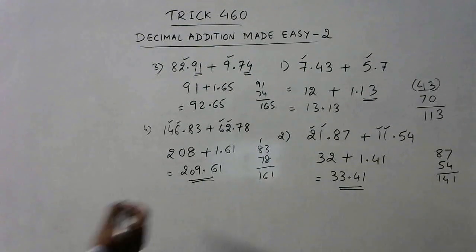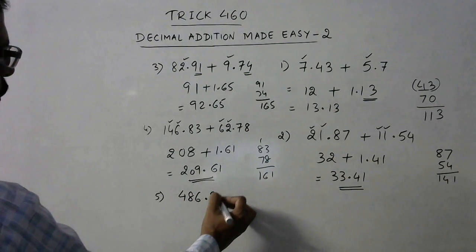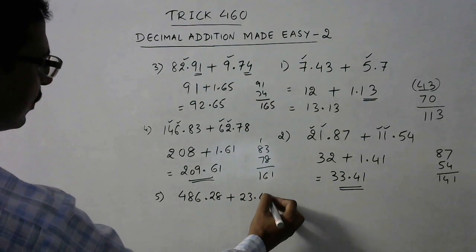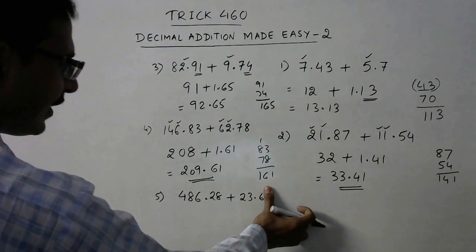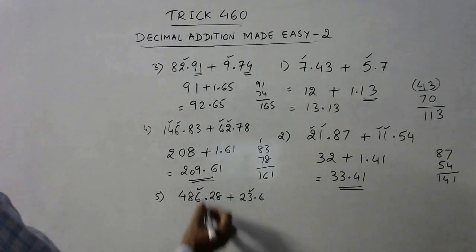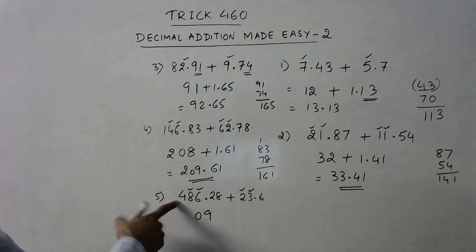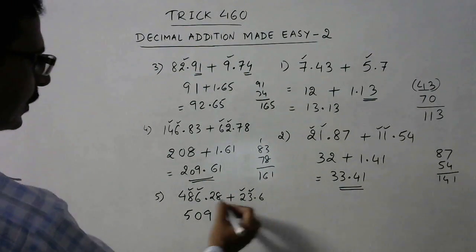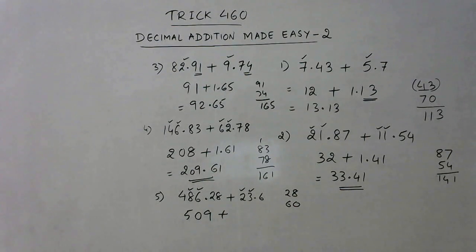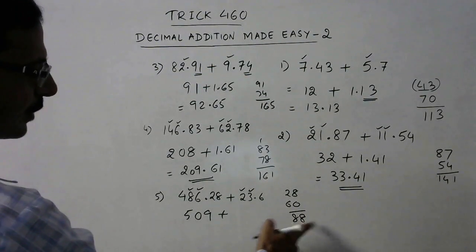More examples: say we have 486.28 added to 23.6. Now 3 plus 6 is 9, 2 plus 8 is 10, zero, one carry, so only 4 is left, so 5 plus... now this is 28, and now we have a single digit here, so put a zero like we did in the first example. Now this becomes 88, so we have to put a decimal two digits from the right side, so this becomes 0.88. So your answer is very simple, 409.88.